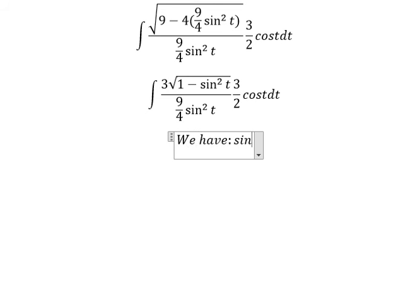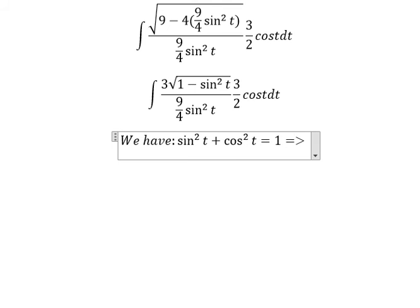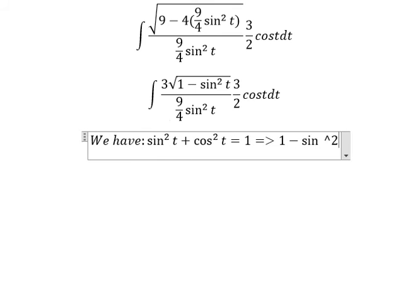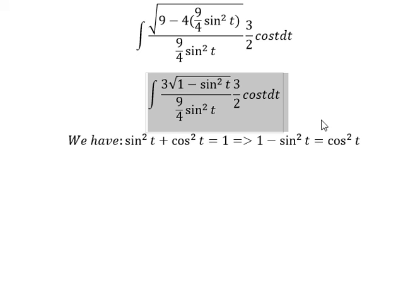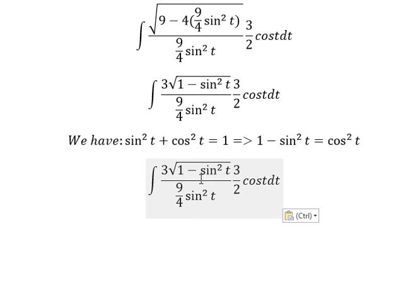We have the formula sine t square plus cosine t square equal to number 1, so 1 minus sine t square equal to cosine t square. So we change 1 minus sine t square into cosine t square.